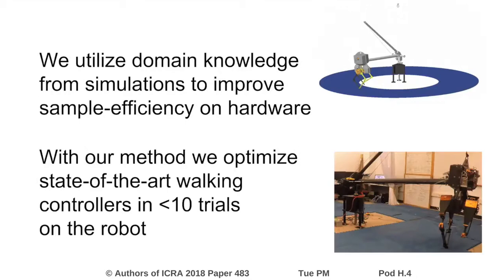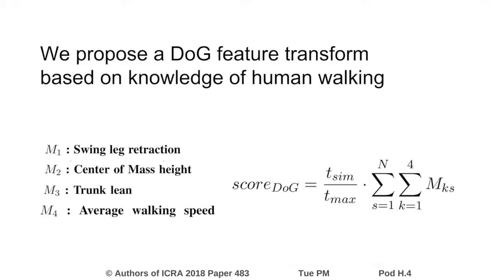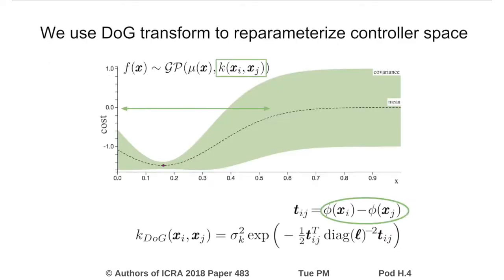We demonstrate that our method can optimize state-of-the-art walking controllers in less than 10 trials on the robot. We propose a feature transform based on the knowledge of human walking. This transform is a generalization of determinants of gaits used by physiotherapists to evaluate the quality of human walking. We run short 5-second simulations for a range of controller parameters and then extract the DOG scores for the simulated points. We use these scores to compute similarity between points during Bayesian optimization on the real robot.